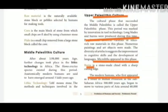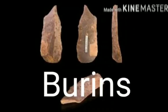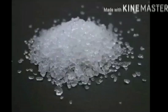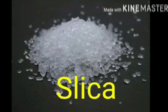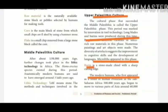Now we are going to see about Upper Paleolithic Culture. The culture phase that succeeded the Middle Paleolithic is called the Upper Paleolithic phase. This period was marked by innovation in tool technology. Long blades and burins were produced during this time. People used different varieties of silica-rich raw materials in this phase. Numerous paintings and art objects were made. The diversity of artifacts suggests the improvement of cognitive skills and the development of language.